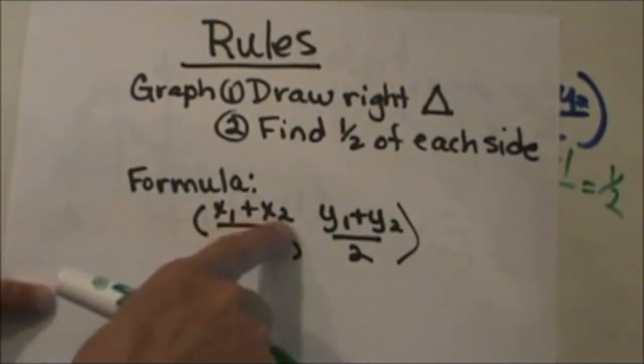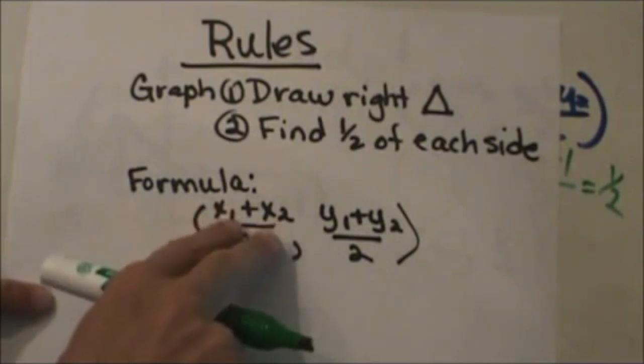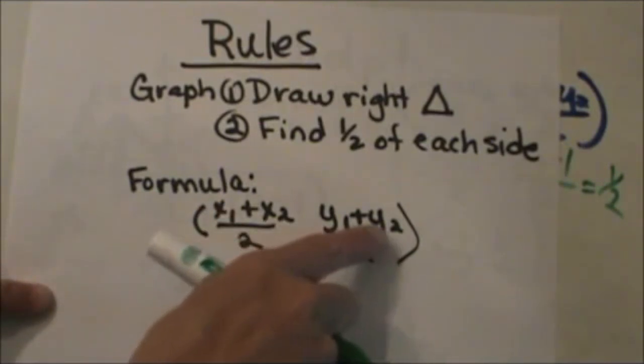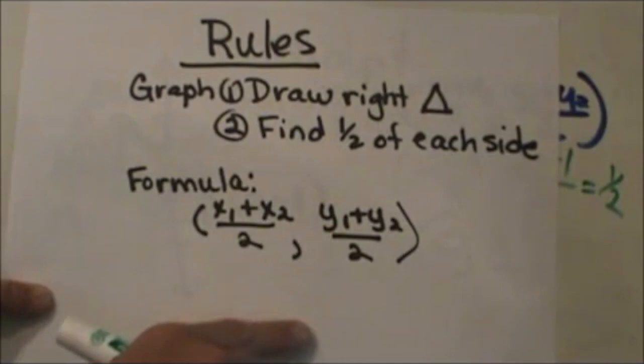Or the formula. We did x1 plus x2 divided by 2, so you average the two x-coordinates, y1 plus y2, add those two together to get the y-coordinate. Hope this was helpful.